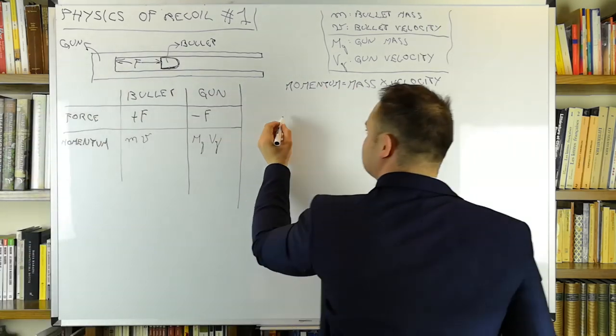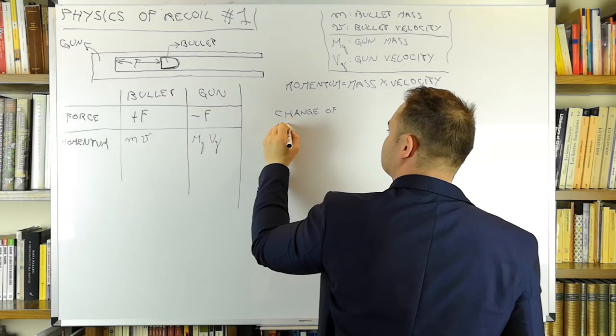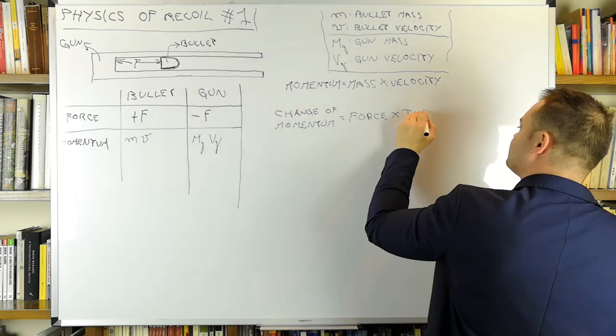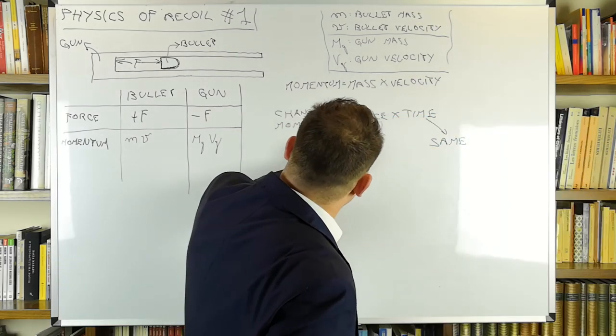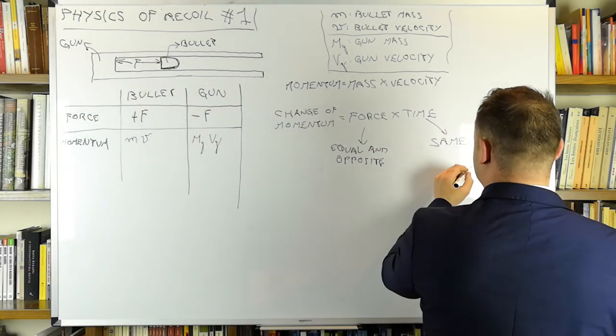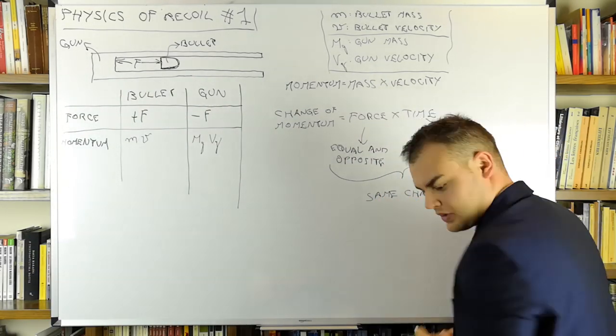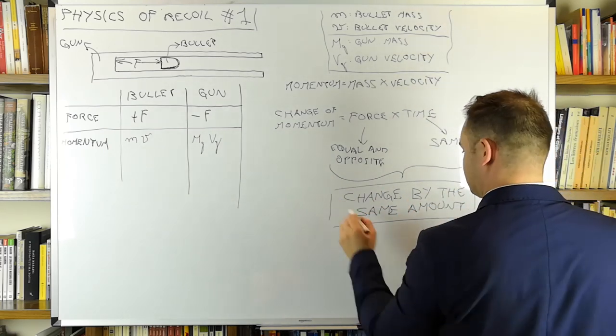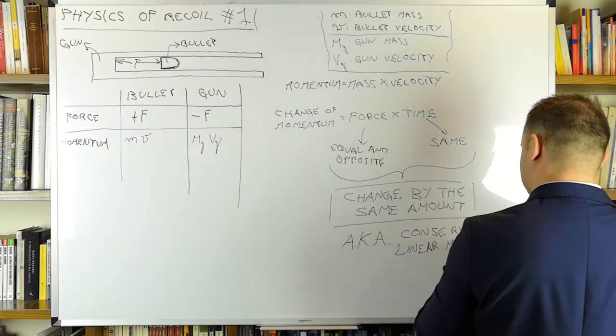The application of force for a certain amount of time will change the momentum by an amount equal to the product of the force by the time it is applied. But of course the time it is applied is the same both for the bullet and the gun, and we know the forces are equal and opposite. Consequently, the gun gets a change in momentum that is numerically equal to the change of momentum of the bullet.